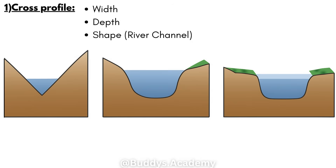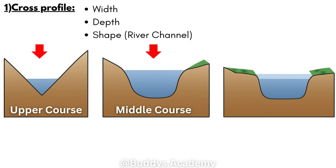And we're going to see the shape. If you take a look all the way on the left, that's going to represent your upper course, and you can see how that's going to be a V-shaped valley, meaning there are going to be steep sides. Because it's located in your upper course, your river is going to be very shallow and have a very narrow channel. Then as we get to the center, we get to your middle course, where the valley is going to become wider with more of a U-shape. That means your river channel is going to get deeper, the water level is going to get higher, and it's going to get much wider.